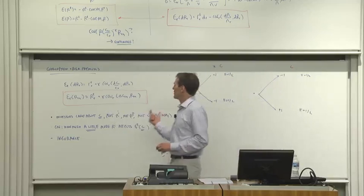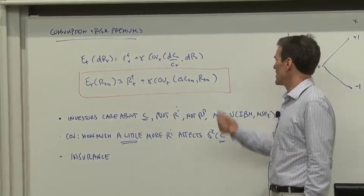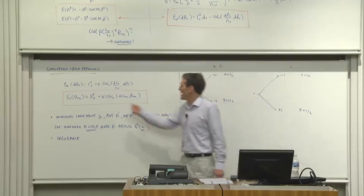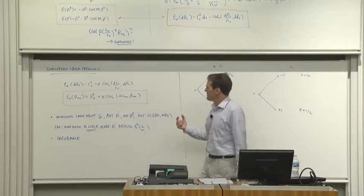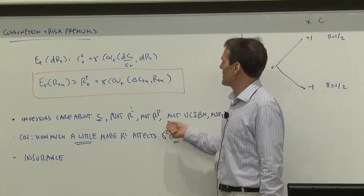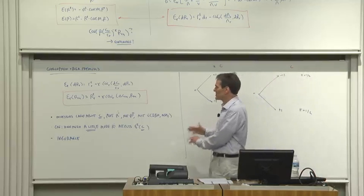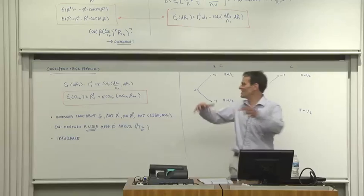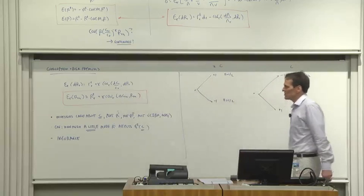This is a beautiful formula and the heart of all of finance. The key insight: investors care about consumption — not the return of individual securities, not the portfolio return, not the stocks they hold, but consumption. The covariance of a return with consumption growth tells you how much buying a little more of that asset affects the volatility of your consumption growth, and that's what you really care about. If you're asked whether you want some of this return, the answer depends on what it does to your overall consumption growth.